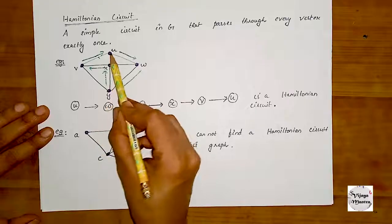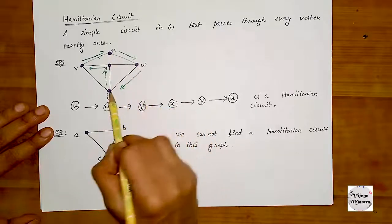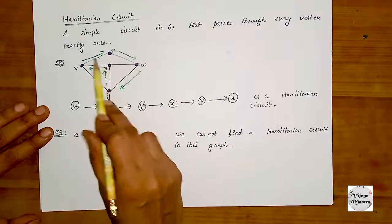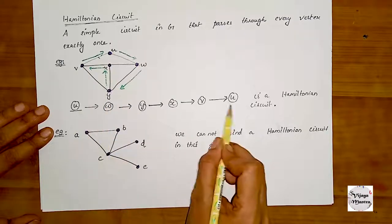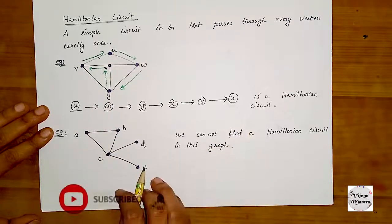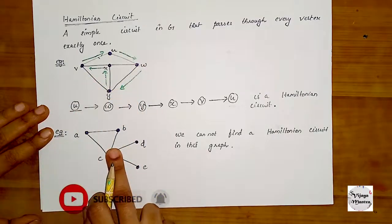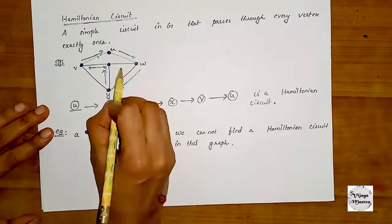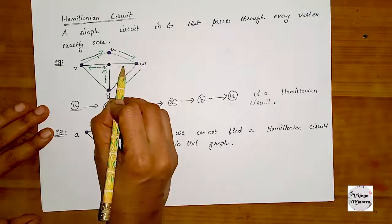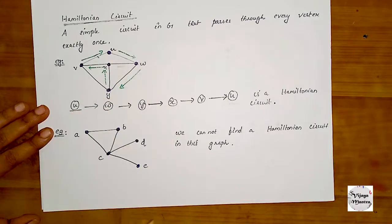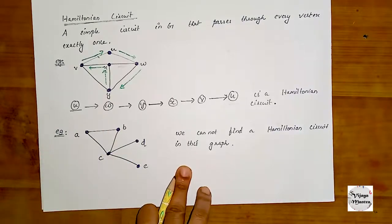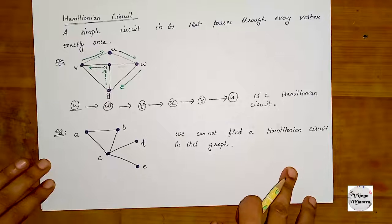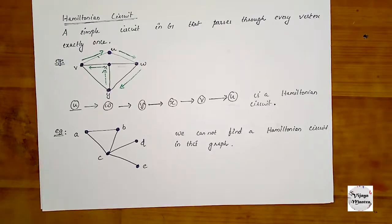Starting at U: U to W, W to Y, then Y to X, X to V, then V to U. U starts and ends at U — that's a Hamiltonian circuit. Every vertex is visited, and we close down back to the starting vertex.